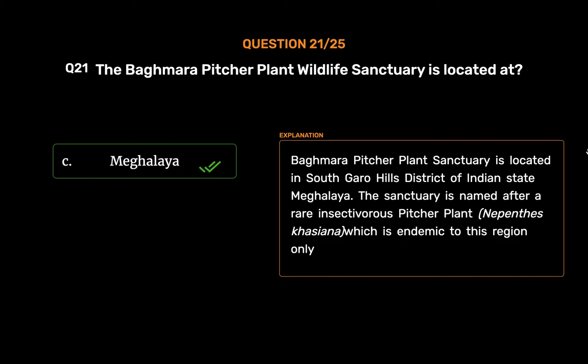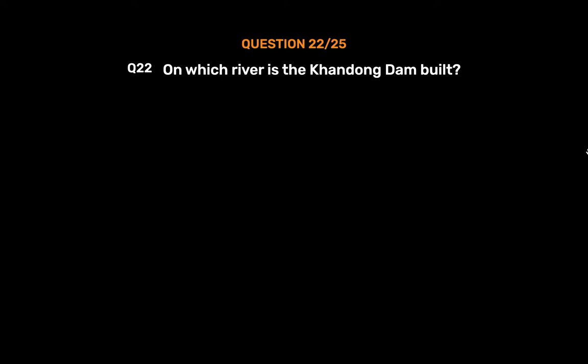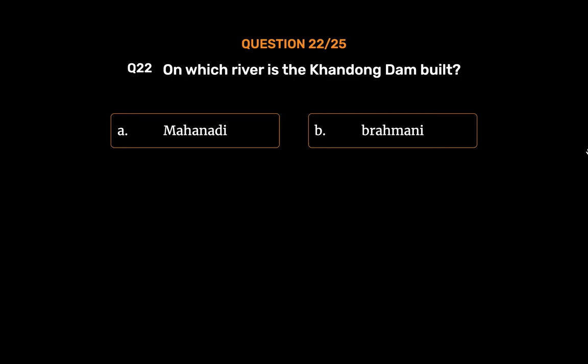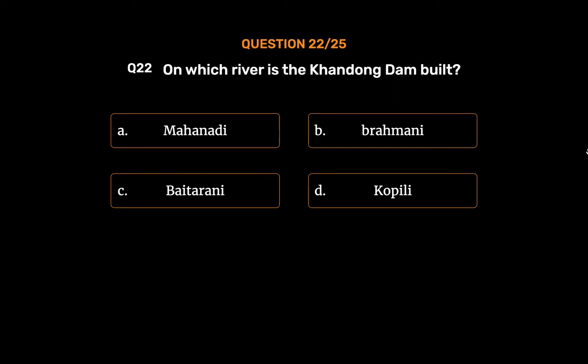Question number 22. On which river is the Umkhen Dam built? Option A: Mahanadi. Option B: Brahmani. Option C: Baitarani. Option D: Koppili.